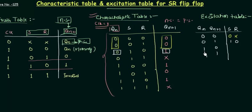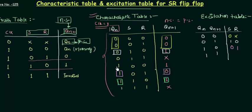When QN is 1 and QN+1 is 0, we have S is 0 and R is 1. For the last case when QN and QN+1 are both 1, R is always 0, but S is changing from 0 to 1, so S is our don't care and R is 0.